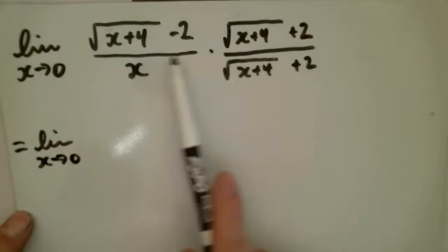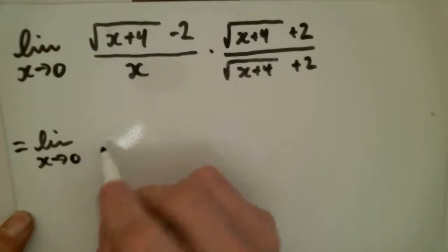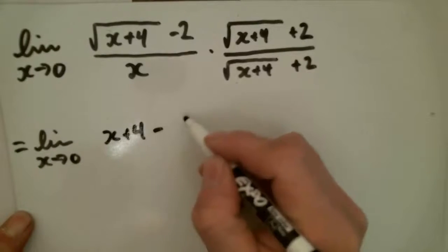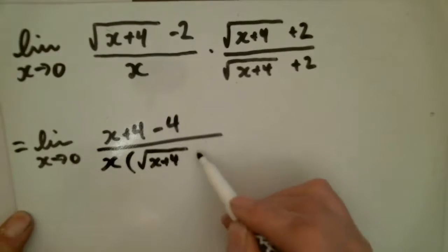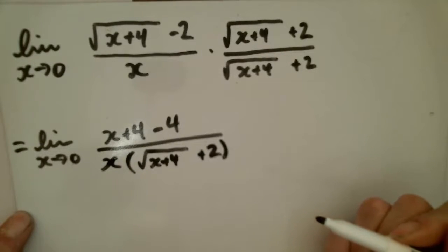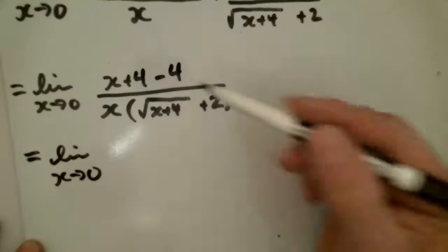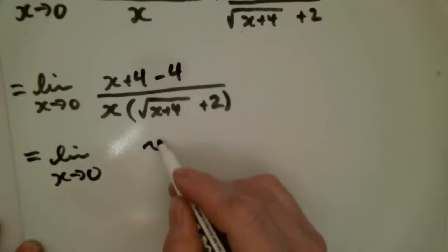When we multiply by the conjugate, we end up with this expression in the numerator. The denominator remains the same. x plus 4 minus 4, well that's just x.